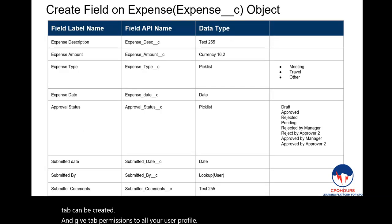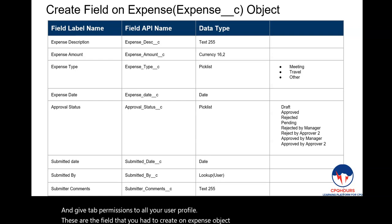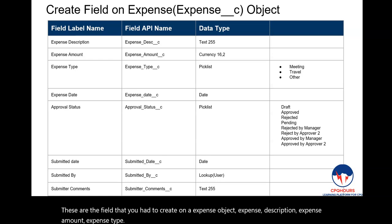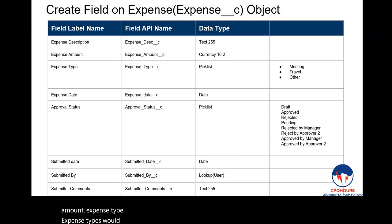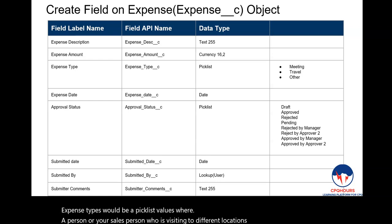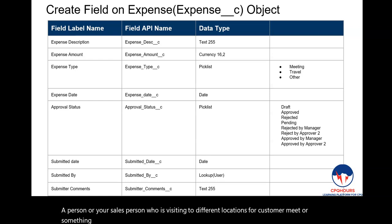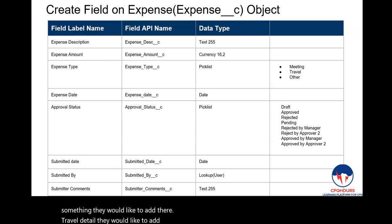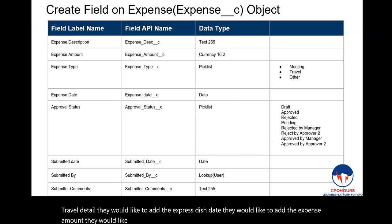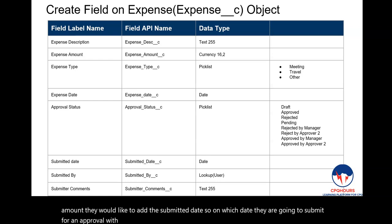These are the fields you need to create on the Expense object: Expense Description, Expense Amount, and Expense Type. Expense Type should be a picklist. A person visiting different locations for customer meetings can add their travel details, expense date, expense amount, and the submitted date — the date on which they submit for approval with their managers.